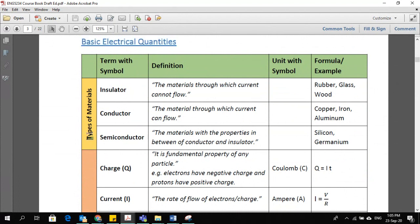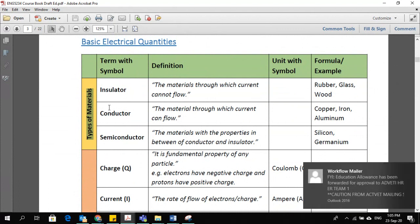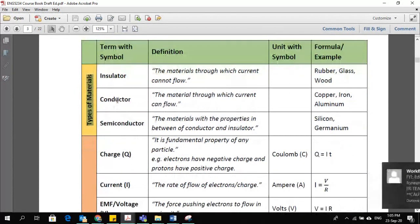For example, the first one here is the types of materials. As you know, being electrical engineers, we categorize different materials into three groups. First one is insulator, the material through which current cannot flow. Examples are mentioned here. Second one is the conductor, those materials through which current can flow.